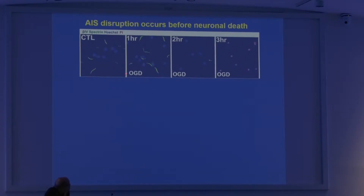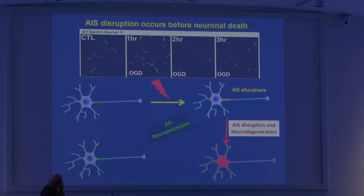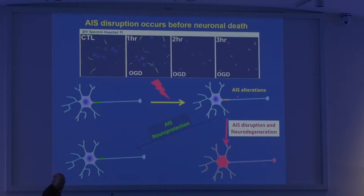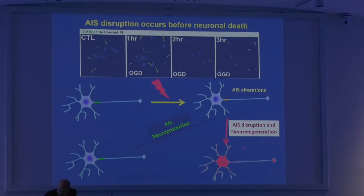If we attack the axon initial segment of neurons — for example, by applying oxygen-glucose deprivation — you can see that after one hour we still have axon initial segments, but two hours later we don't. We don't see neuronal death yet; it's only after we lose the axon initial segment that we see neurons dying with propidium iodide. So the idea is that anything altering the brain can cause alterations in the axon initial segment, and if we can protect it, we can keep neurons working and diminish the effect of some diseases.